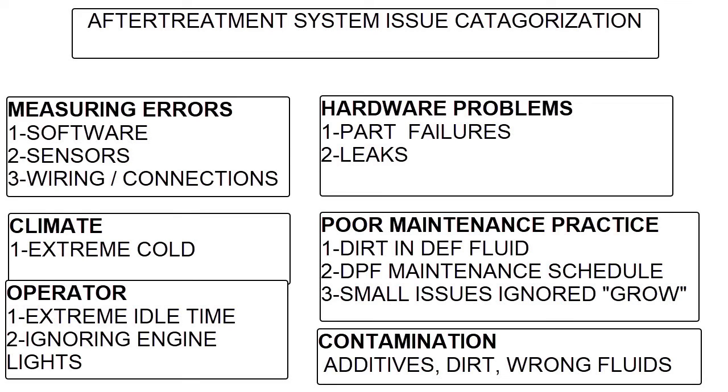Next down is maintenance practice. Dirt in the DEF tank, which causes the system to have poor pressure. DPF maintenance schedule. Maybe the DPF was supposed to be changed to 200,000 miles, and it's got 500,000 on it. It's the original DPF, and it's all busted up. Small issues will grow into big ones if you ignore them.